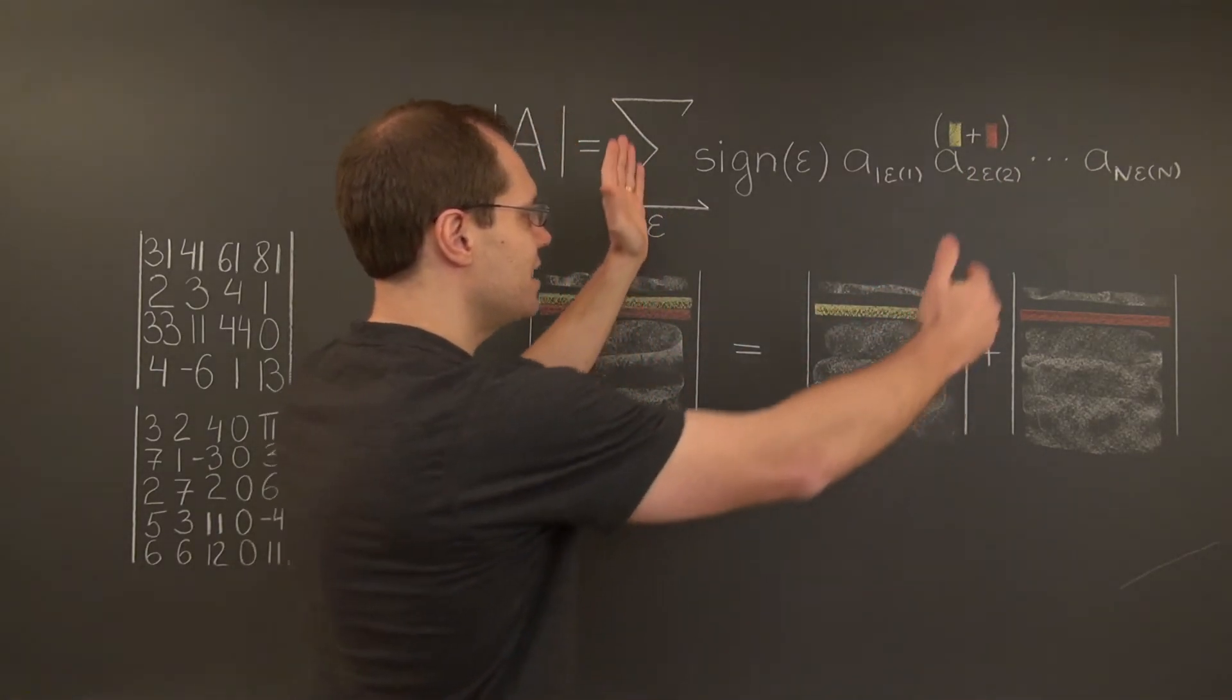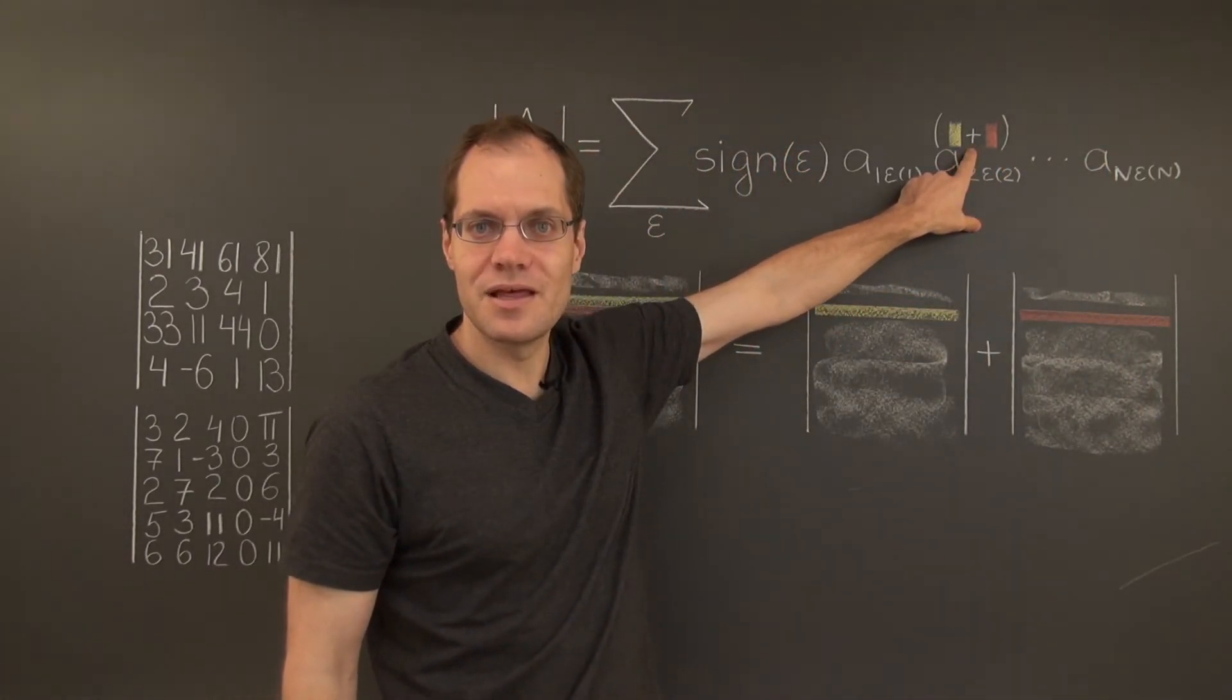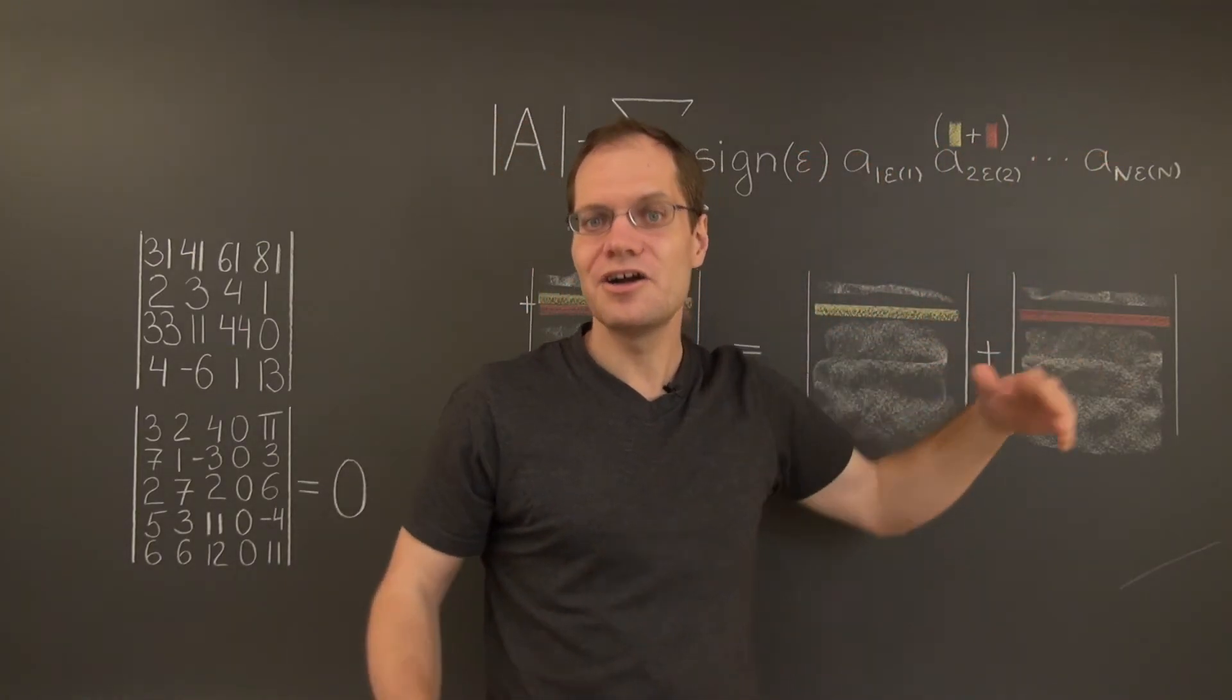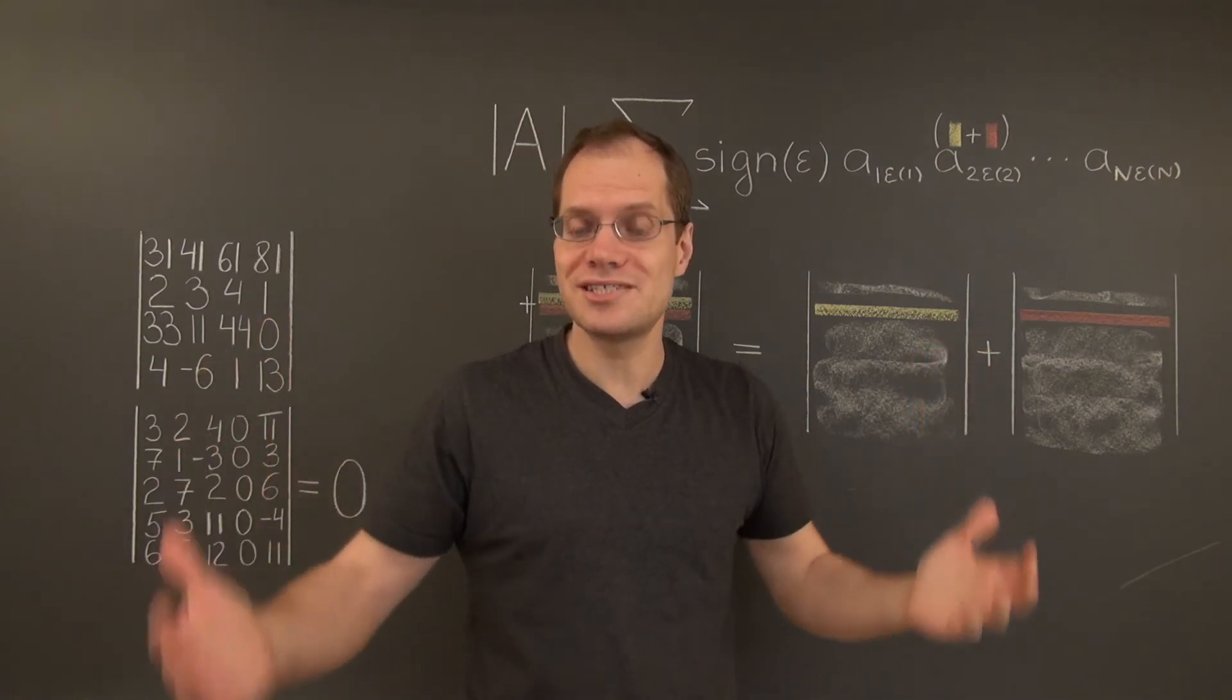Therefore, each term in this grand sum can be broken up on this plus. In other words, it can be distributed according to the common distributive law. And we'll end up with two sets of sums.